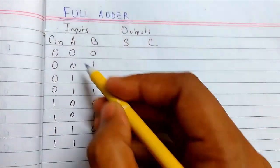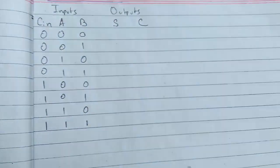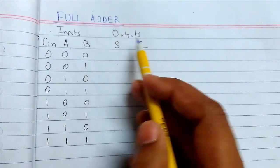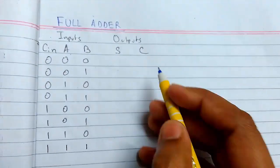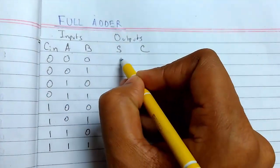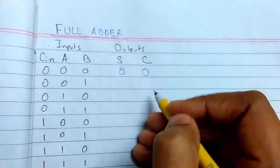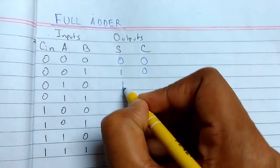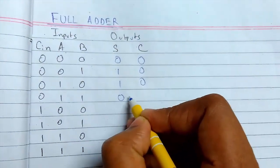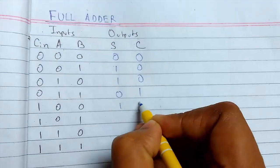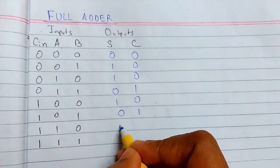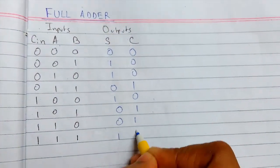I made the inputs now. This is C-in, this is the addend, and this is the augend. This is sum and this is carry out. So this will be 0 for both cases, then 1, 0, then 1, 0, then 0, 1, and so on through the truth table values.